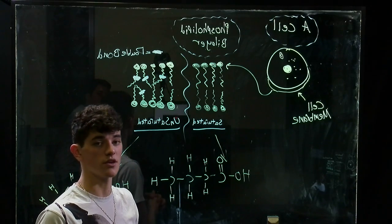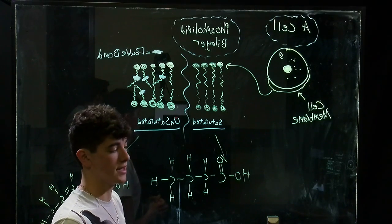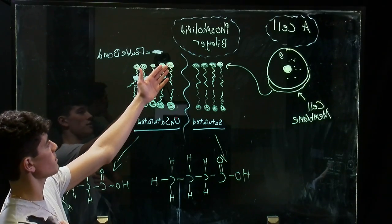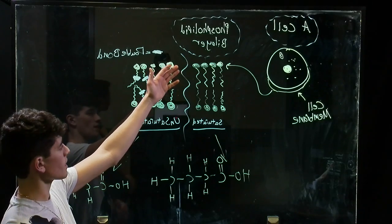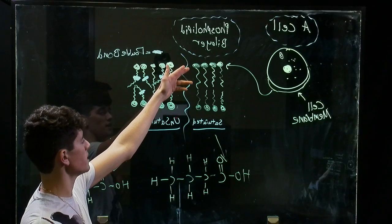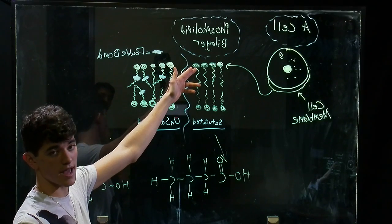Today we'll be discussing the phospholipid bilayer. Here's a diagram of the phospholipid bilayer, and it's composed of two layers of lipids: the first layer being the hydrophilic heads, which are water attracting, and the hydrophobic tails, which are water repelling.